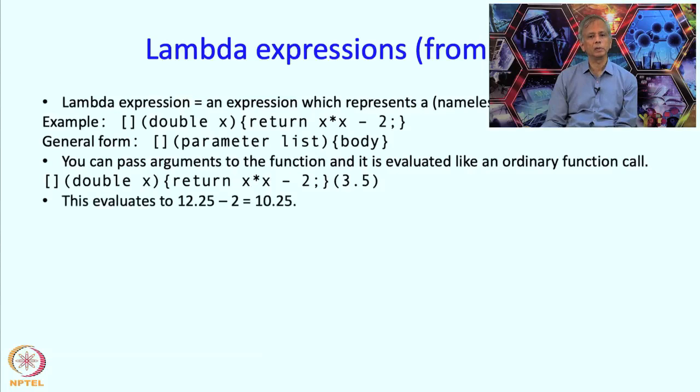So this evaluates, so x times x is 12.25 minus 2, so this evaluates to 10.25 as you might want. And you can certainly write z equals square bracket double x all of this 3.5 and then z would be set to 10.25.